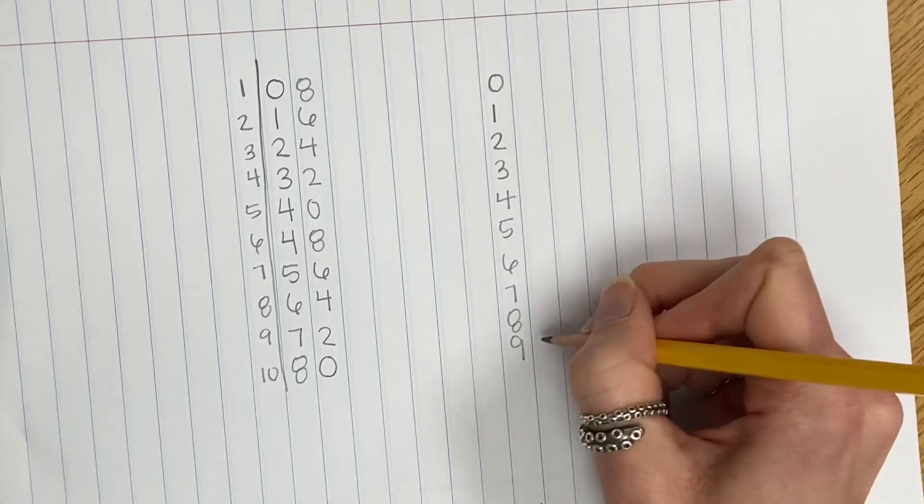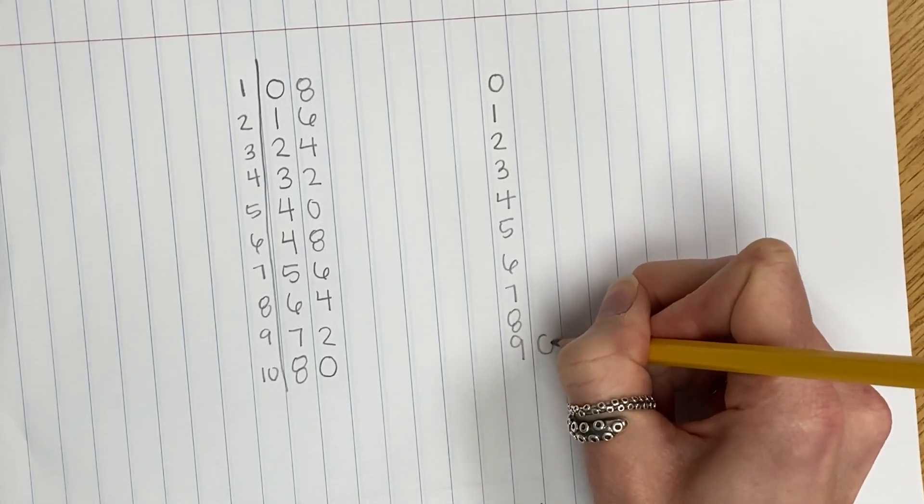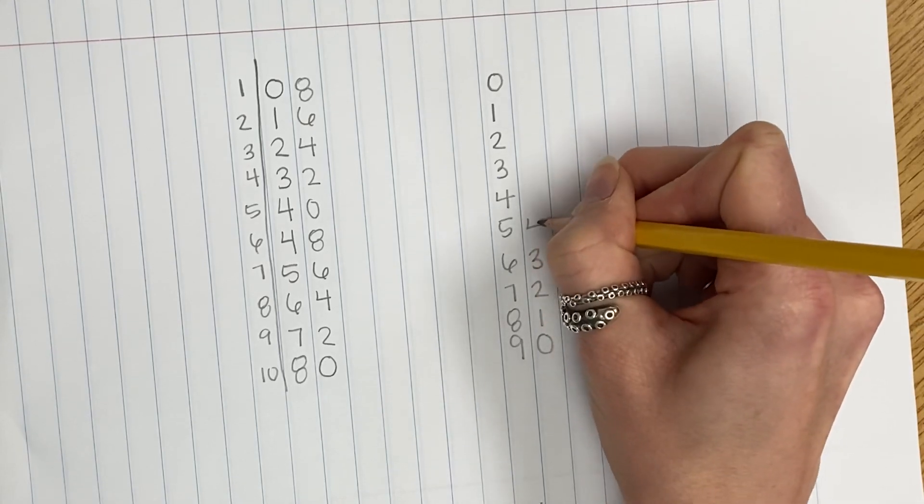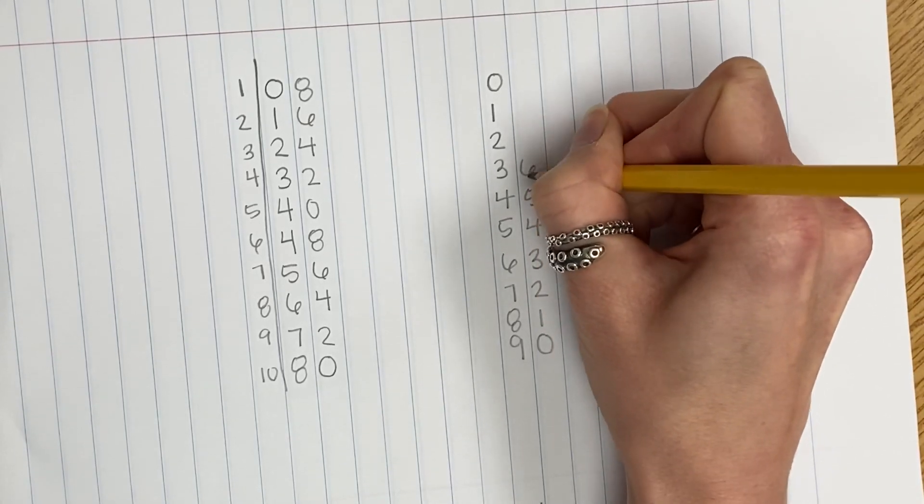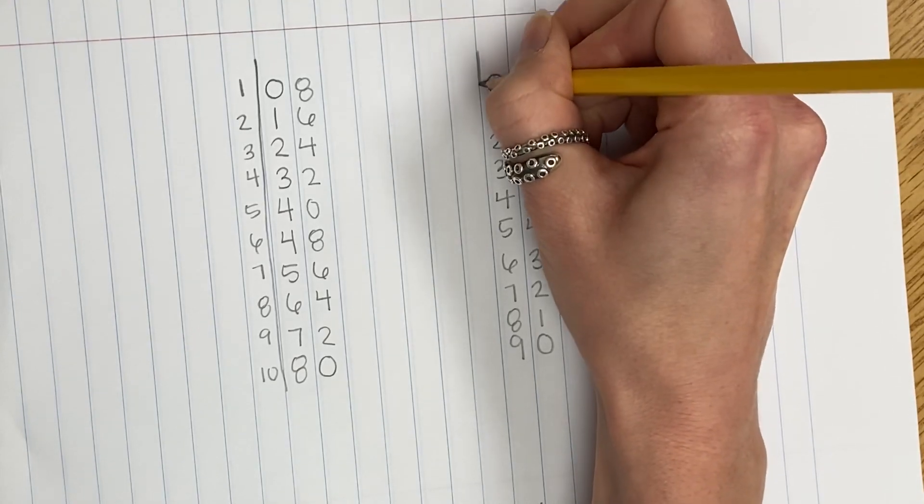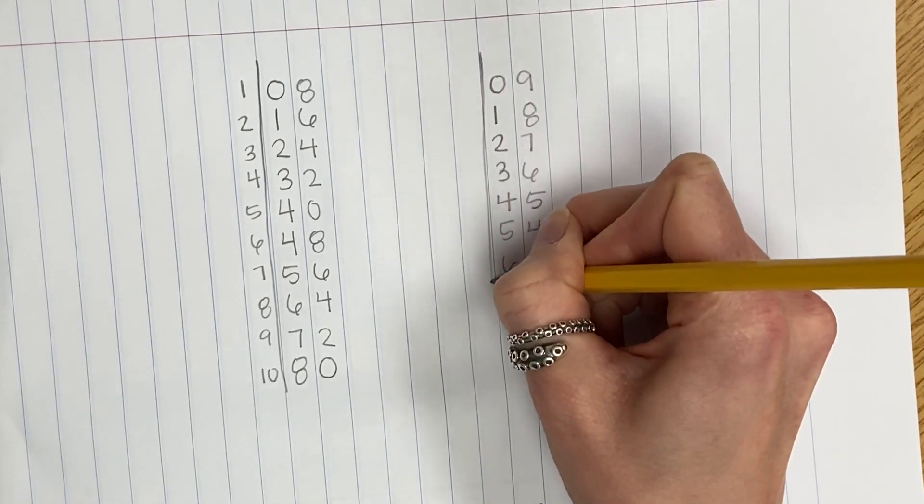When I get to nine, I'm going to start at zero and count by ones going up. And now I have my multiples of nine.